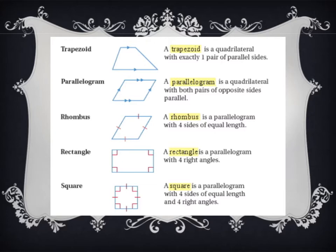Next we have a rhombus. A rhombus is a parallelogram with four sides of equal length. It looks very similar to a parallelogram, but all four of the sides are equal. Think to yourself: how can you tell in this drawing that all four sides are equal? There's a very telling sign in this picture. If you guessed that it was these little tick marks, then you were correct. The little tick marks tell you that all four of these sides are equal and have the same length. A rhombus is kind of like a slanted square.